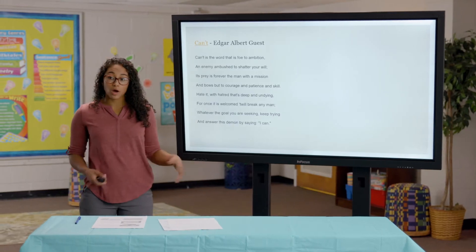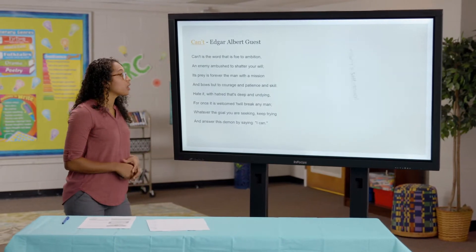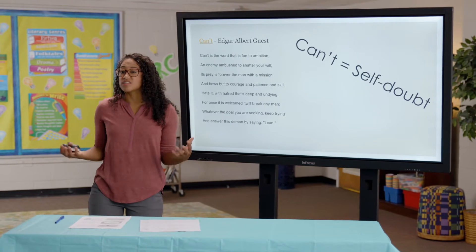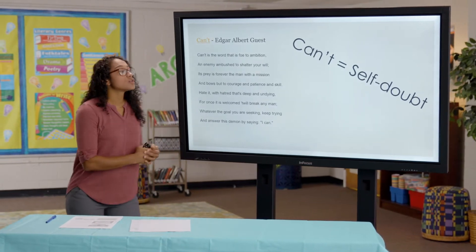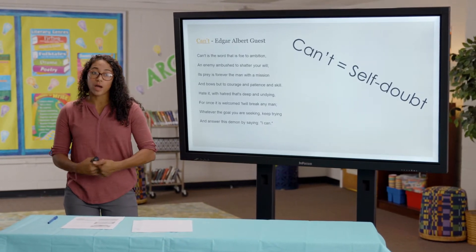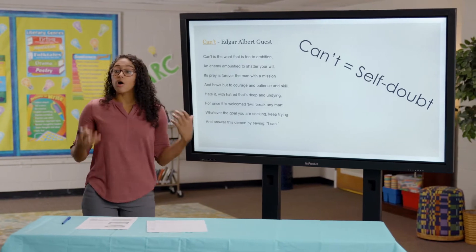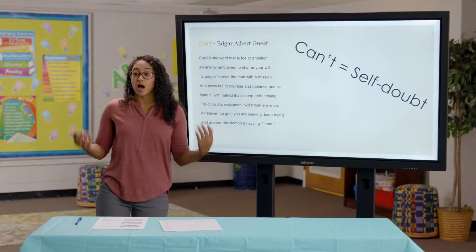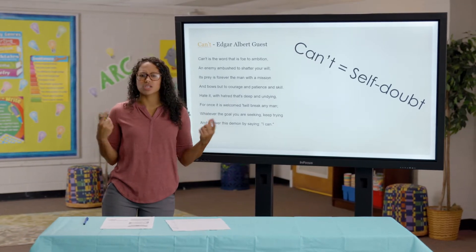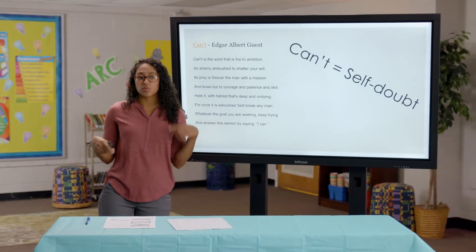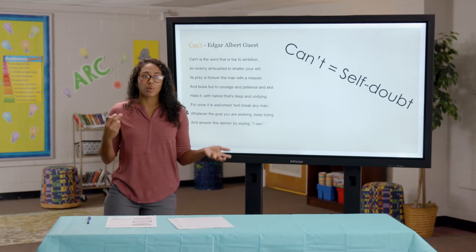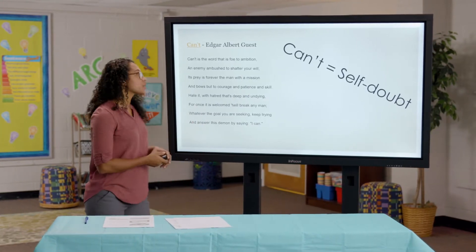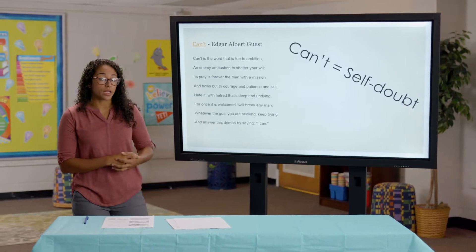We've read this poem multiple times, and we already know that when the author is talking about the word 'can't,' he's talking about self-doubt or doubting yourself. While I'm reading this poem, I want you to look at all the powerful words the author uses to discuss doubt, and think to yourself: based on these words, what does the author want me to understand or picture about this idea of doubt or the word 'can't?' Make sure you're following along.